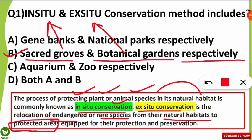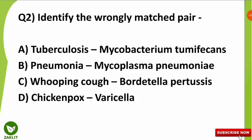Ex situ conservation techniques include cryopreservation, zoos, and botanical gardens. So it is not conserving species in their own habitat — it is relocating them to other habitats or using other techniques. I think you are clear with this. Let's move to the next question.